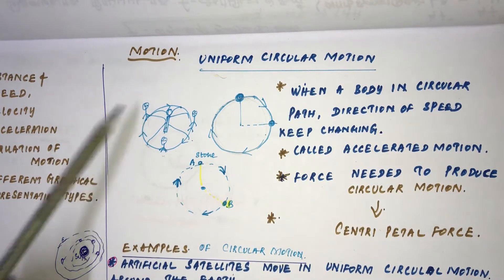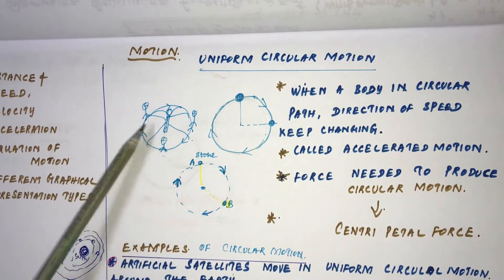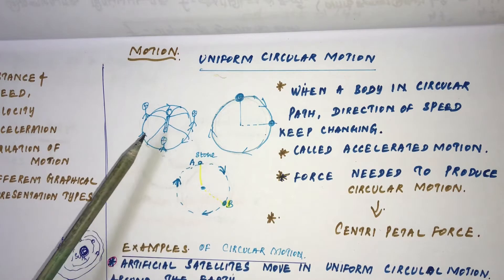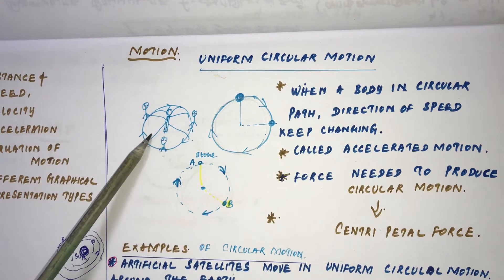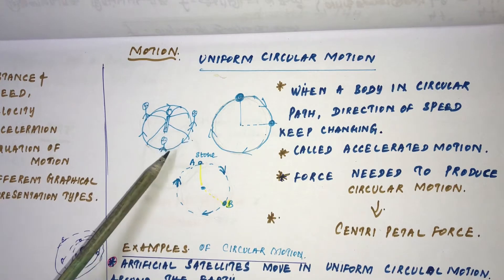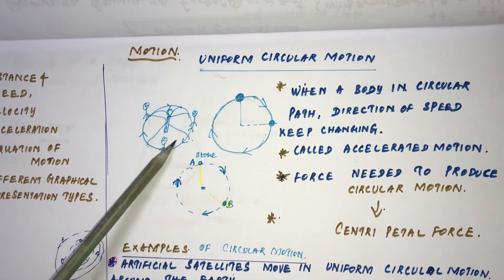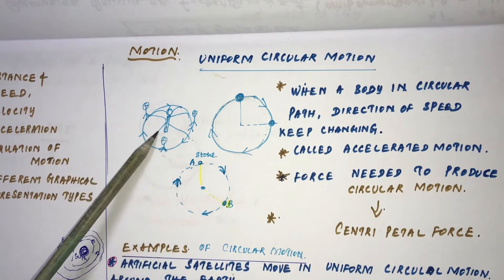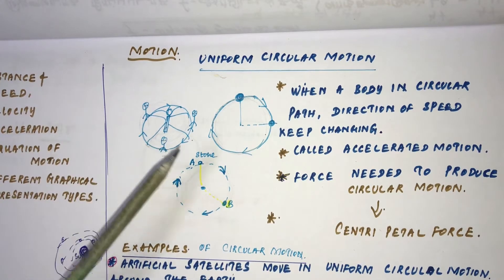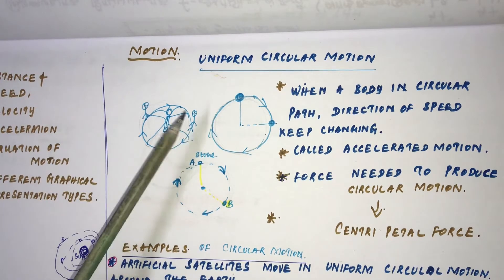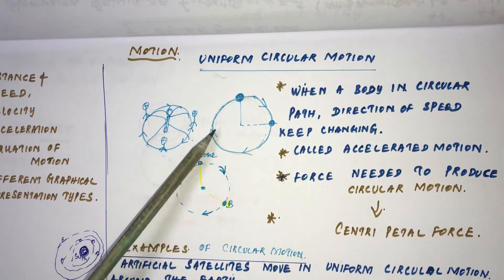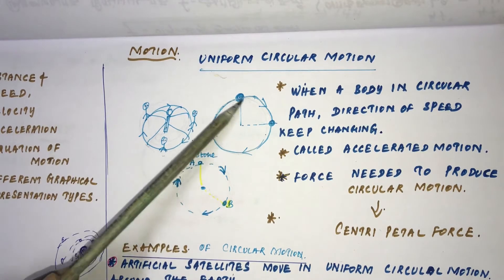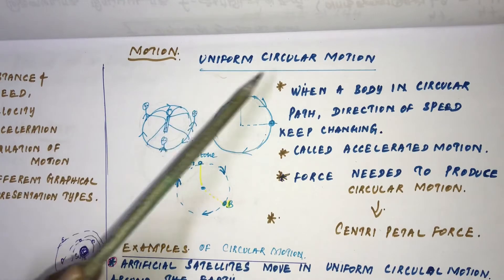When a body moves in a circular path, the direction and speed of the body keep on changing. So this type of movement is called accelerated movement or accelerated motion. The movement of a body with uniform speed in a circular path is called uniform circular motion.